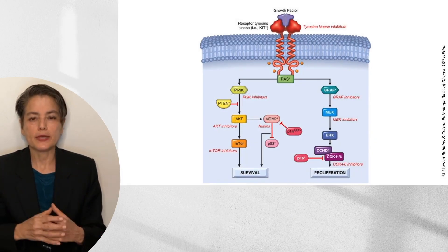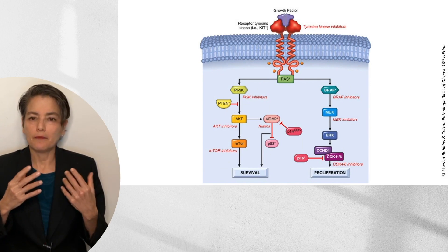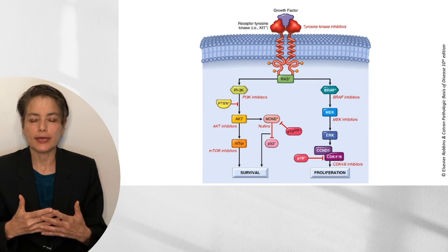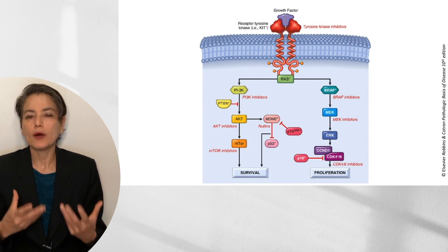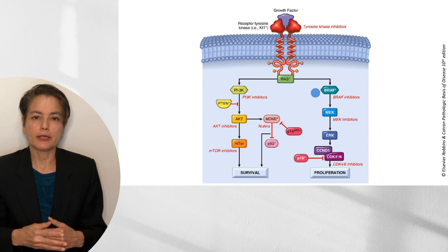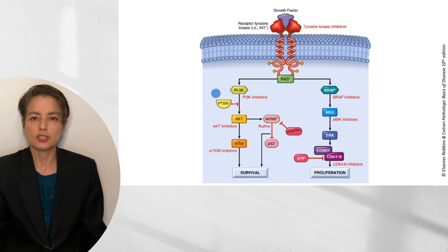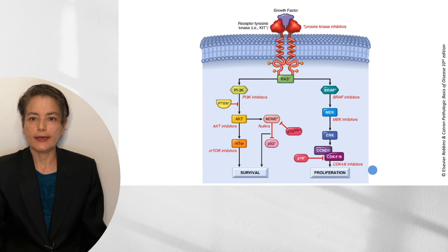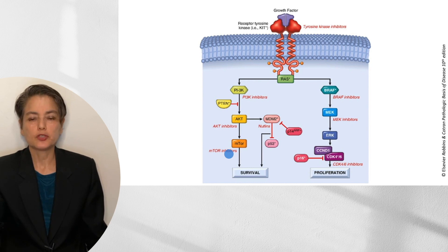Looking at the signaling pathway diagram — not for memorization, but to understand how these relate — KIT, RAS, PTEN, MDM2, P53, P16, and BRAF can all be mutated in melanoma. Pharmaceutical agents targeting these pathways include tyrosine kinase inhibitors for KIT mutations, CDK4/6 inhibitors when P16 is knocked out, and mTOR inhibitors, among others.